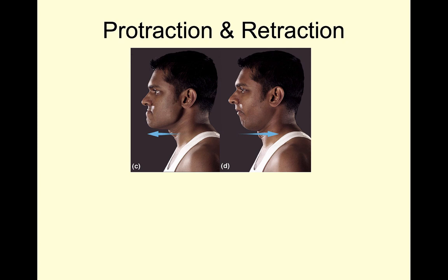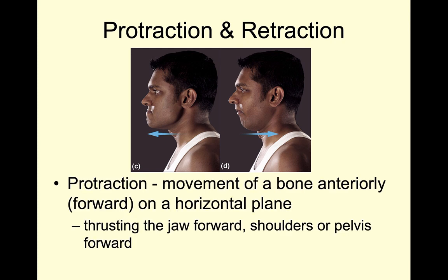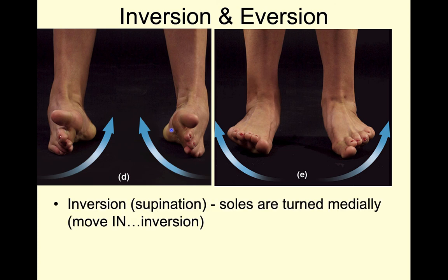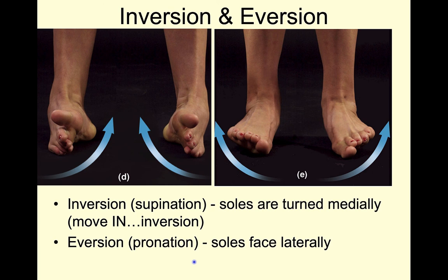With protraction and retraction — one of my favorite anatomical photographs — protraction is the movement of a bone anteriorly along that horizontal plane. You can see this gentleman projecting or protracting his jaw forward; you can also do this with your shoulders or your pelvis. Retraction is moving that bone posteriorly. Inversion and eversion — we can also use the terms supination and pronation here. Inversion is turning your feet in so those soles are rotated medially — we can also call this supination if you think of holding a bowl of soup with your feet. Eversion or pronation is pouring the soup out with your feet, turning the soles laterally.